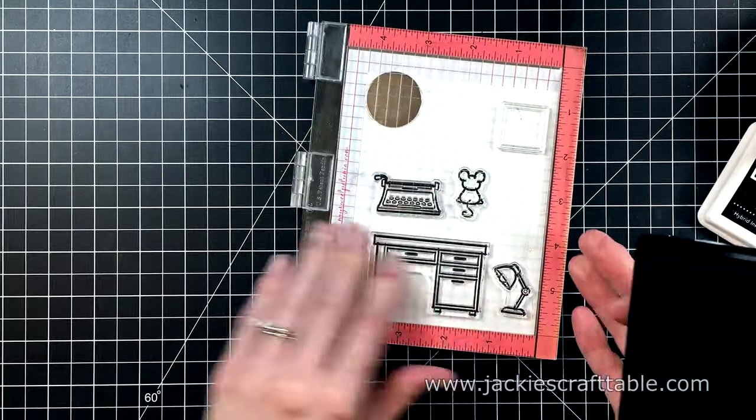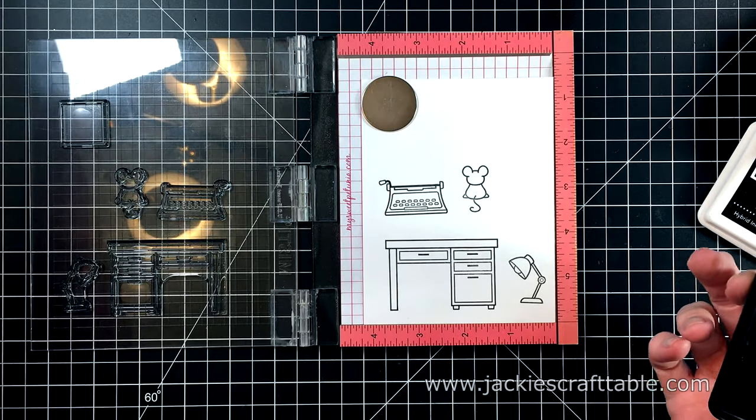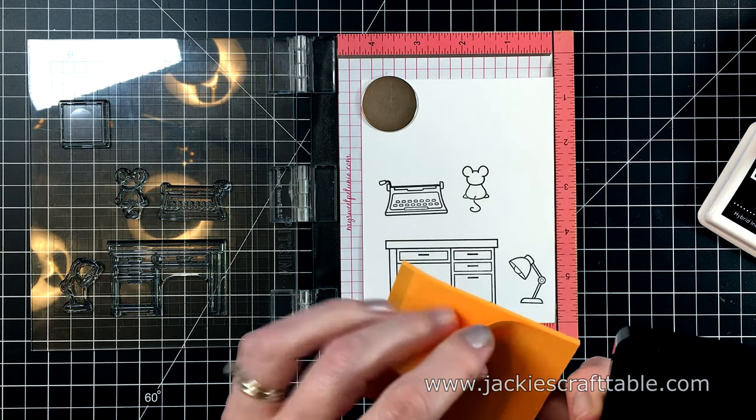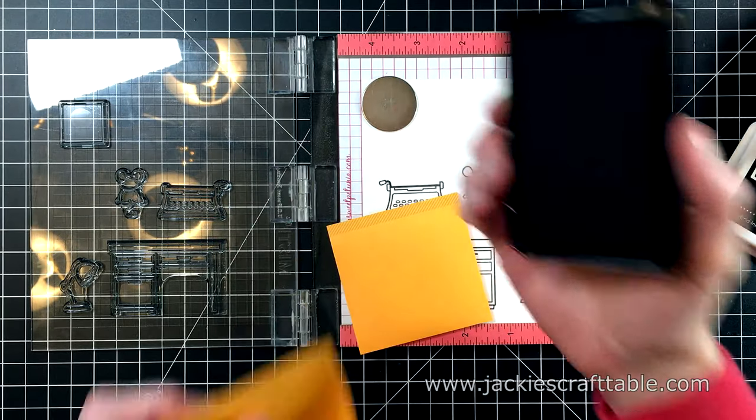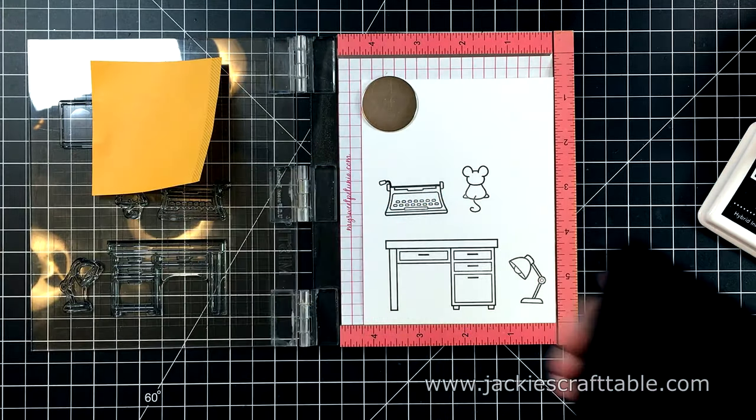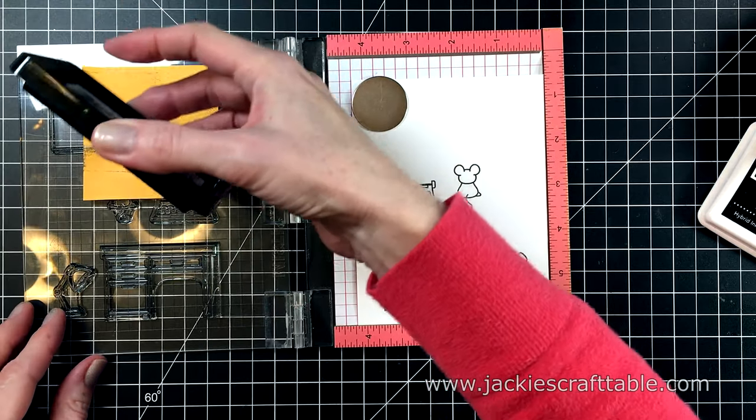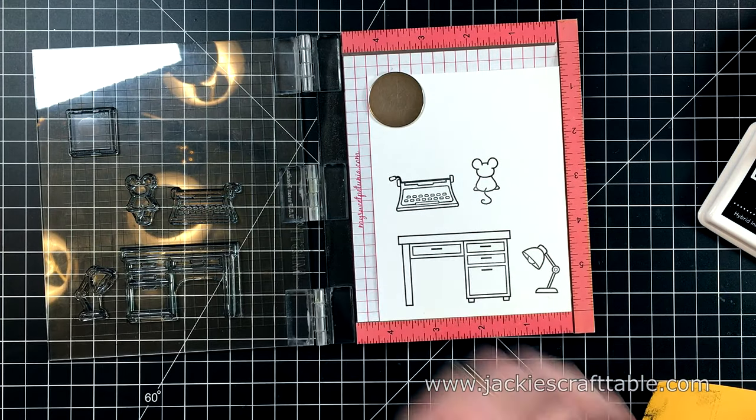So I haven't inked up the square piece of paper that you see at the top yet. I'm going to mask one of the edges with a piece of sticky note paper. This is the full-back sticky note—I love these. So I'm going to ink it up and then I can pull off the sticky note.